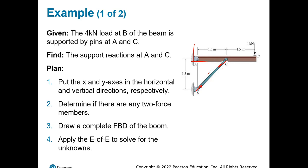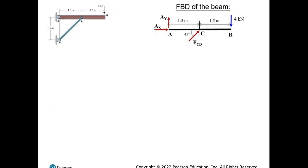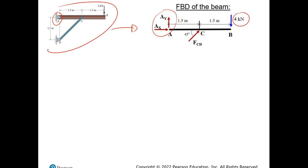Looking at the free body diagram: at A we have two reactions because it's a support, then we have an applied force, and the force from element CD — which is a two-force member. You can draw the reaction either way; at the end of the day it doesn't matter which direction you choose because the sign of your final answer will confirm it. If you get a negative value, it's the opposite direction from the one you assumed.